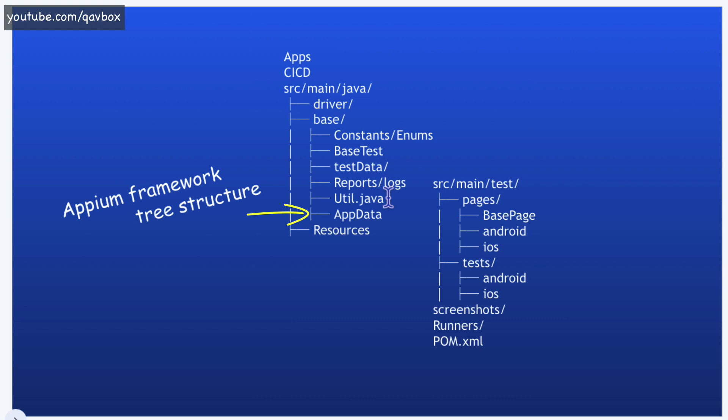Then comes app data, which is similar to test data but kept separate. It would not hold your test data but rather your app details — for example, which app you want to launch, Android or iOS. It would hold a JSON file consisting of five to ten key-value pairs. This can be a properties file, a JSON file, or a .java file. You likely wouldn't have an Excel sheet or CSV file as your app data.